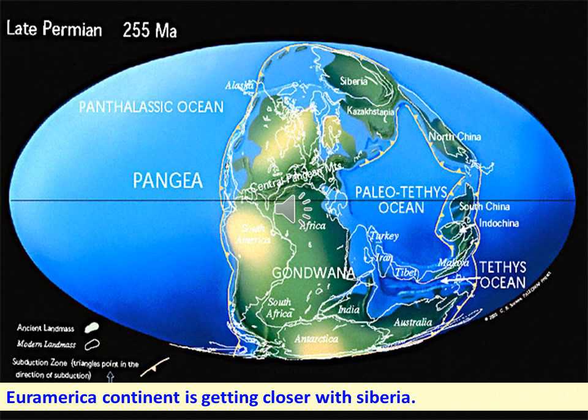In the late Permian era, 255 million years ago, Iran, Tibet, Turkey, India, Australia, Antarctica, and South Africa had slowly started to move towards the equator.